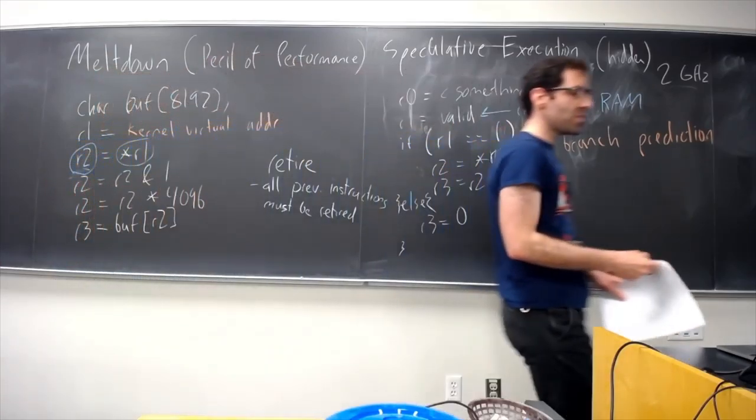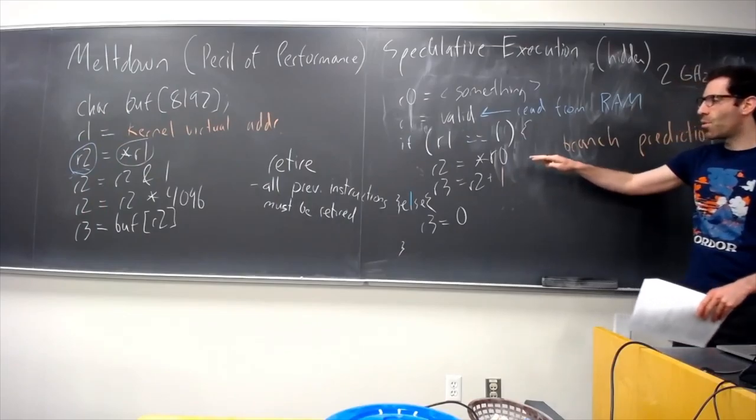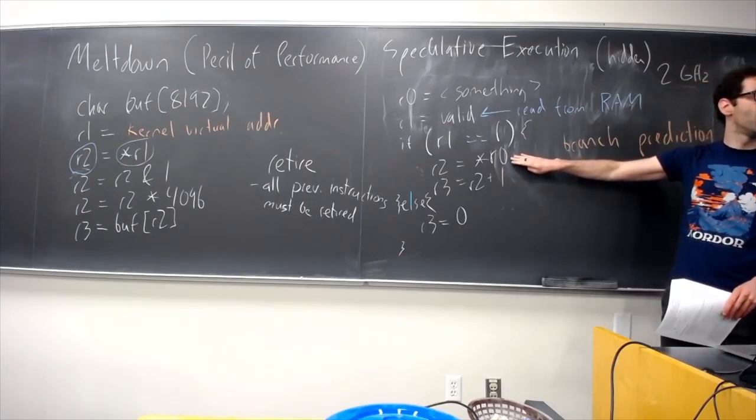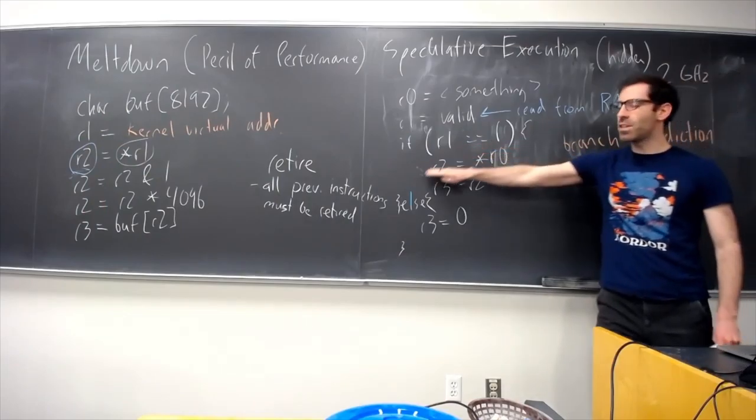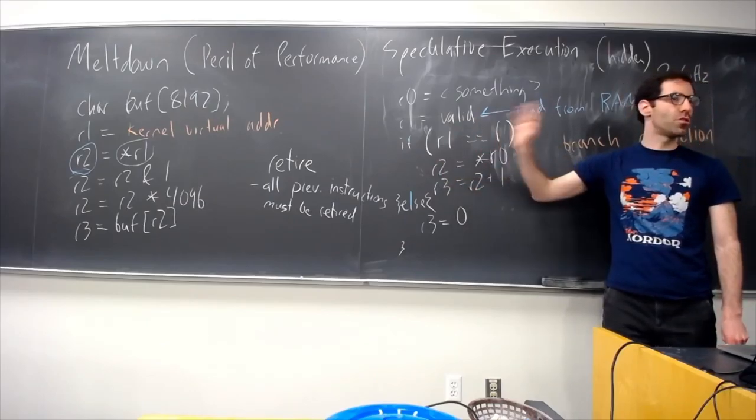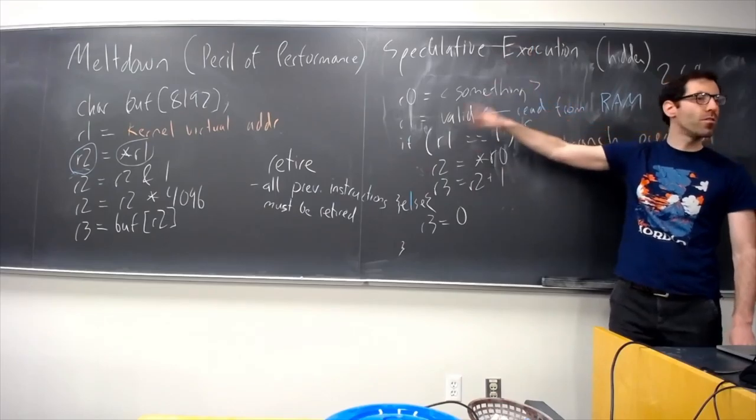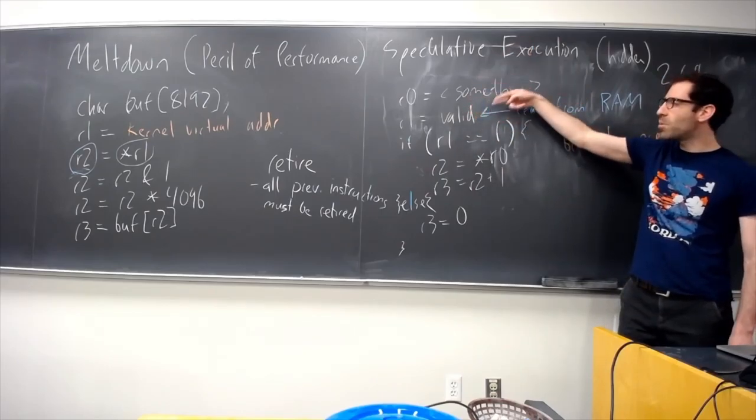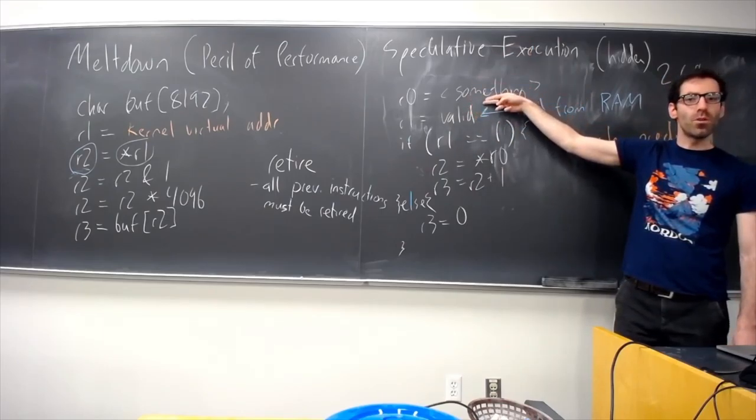We wouldn't actually put data or raise an exception into the real register R2 until we've retired that instruction. And importantly, to retire an instruction, all previous instructions need to have been retired. So, that is to say that, the CPU isn't allowed to have this instruction sort of affect the system by changing the real R2 or make an exception until all previous instructions have been retired, meaning that this read from memory is actually complete.